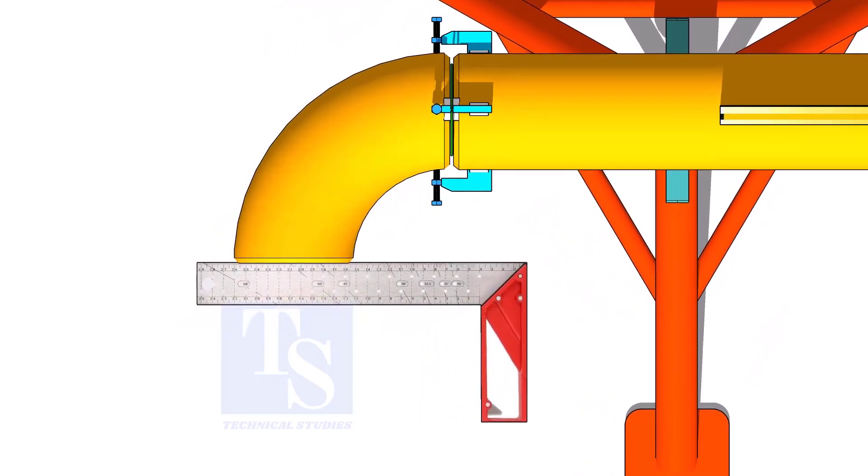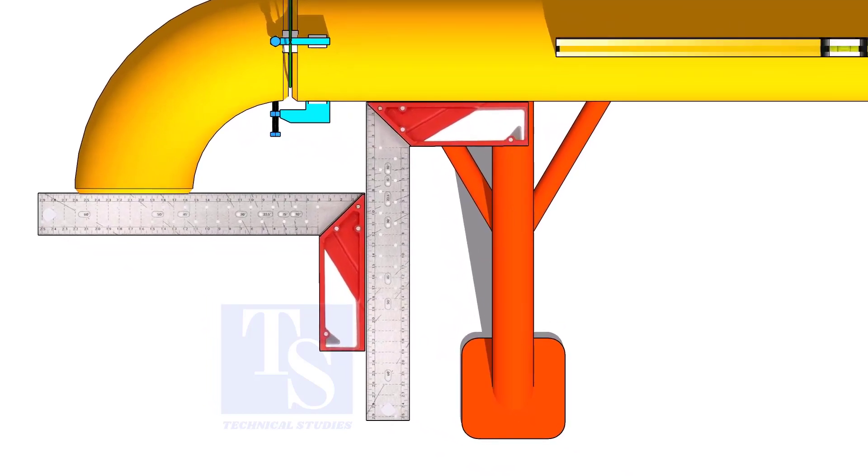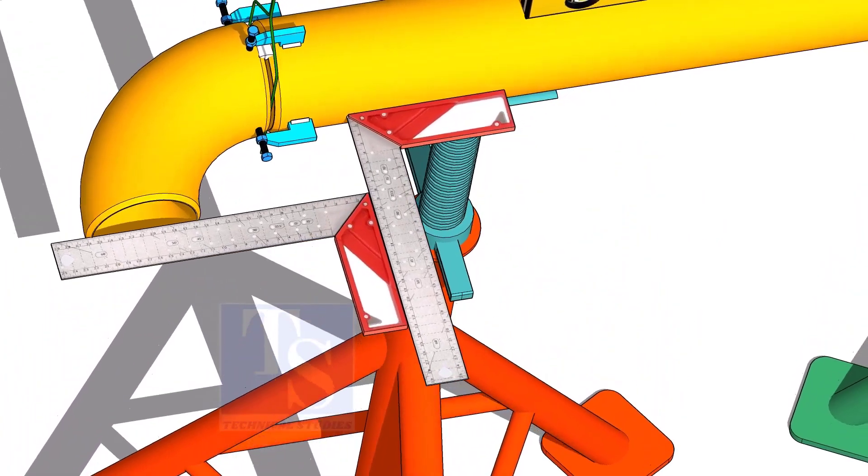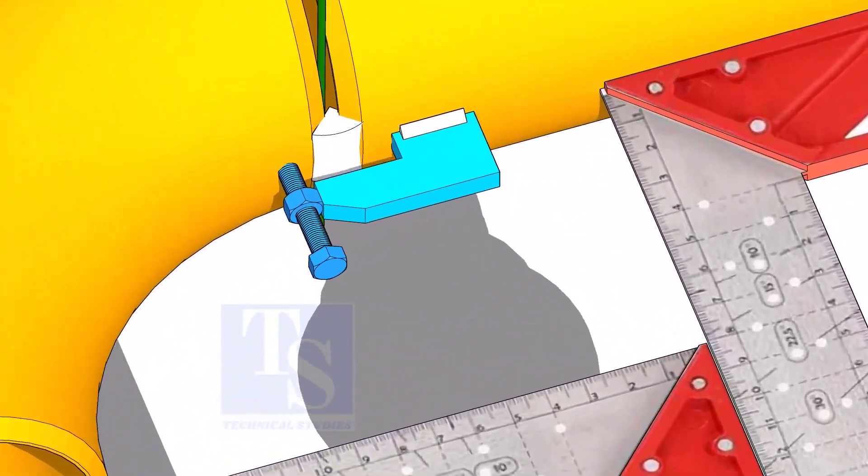Correct the squareness of the elbow using right angles, as shown. Tack weld at both sides of the joints.